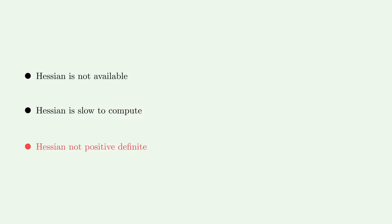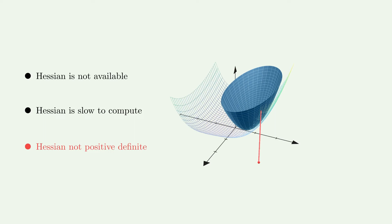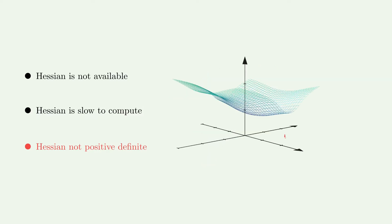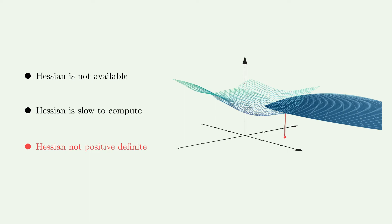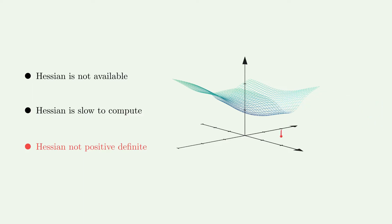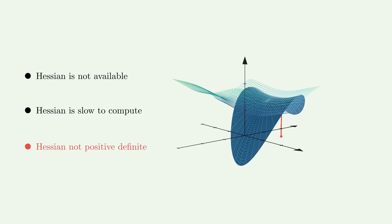Finally, in the previous example we were somewhat lucky, as the Hessian was always positive definite. Positive definite is a property that guarantees that the quadratic approximation has a minimum. If the Hessian is not positive definite, we could have a quadratic approximation that has a maximum and no minimum. Alternatively, the quadratic approximation might have a saddle point — again, no minimum. In such cases where the Hessian is not positive definite, Newton's algorithm might fail.